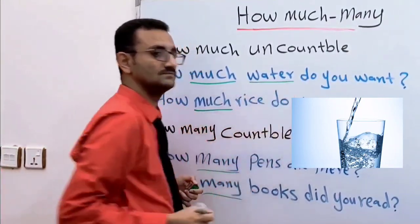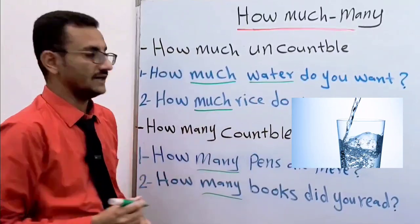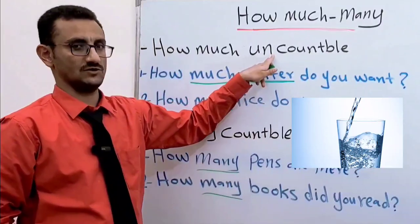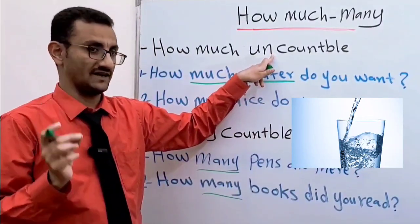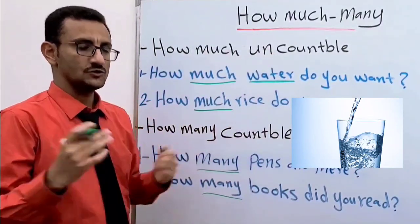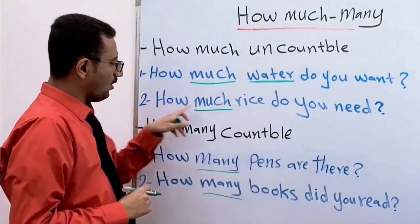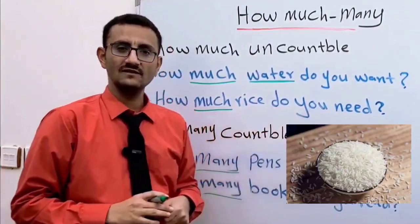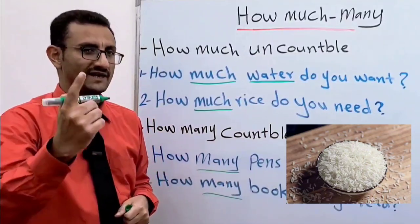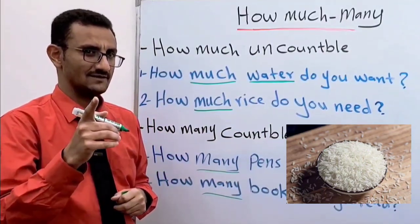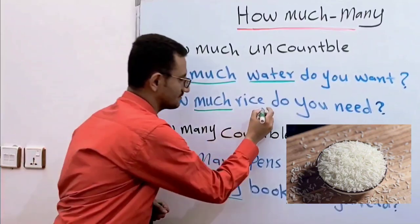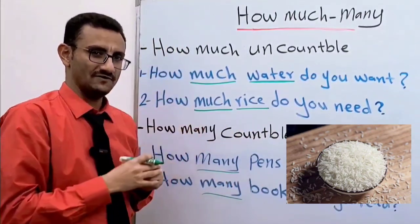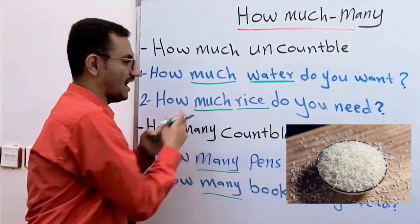Water is an uncountable noun, أي أنها اسم غير معدود. Let's look at the second example: how much rice do you need? What is the uncountable word? Yes, very good, rice. Rice is an uncountable noun. It comes with 'how much'.